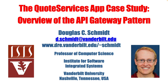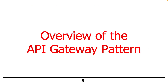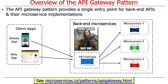Now that we've talked about the overall structure of the Quote Services application and we zoomed in on the Eureka Discovery Service portion, let's now talk about another key part, which is the API Gateway concept. Before we talk about how we do it in detail with Spring and our example, let's first discuss the API Gateway pattern, because it really is a pattern that gets applied in many different places. We're going to talk about the API Gateway pattern and a common realization of this pattern, which will be the Spring Cloud Gateway. The API Gateway pattern provides a single entry point for back-end APIs and their realizations or implementations in the form of microservices.